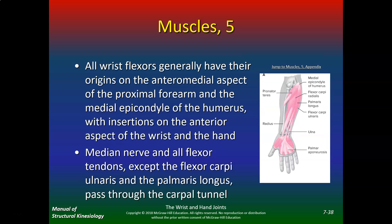All wrist flexors generally have their origins on the anterior medial aspect of the proximal forearm and the medial condyle of the humerus, with insertions on the anterior aspect of the wrist and hand. The median nerve and all flexor tendons — except the flexor carpi ulnaris and palmaris longus — pass through the carpal tunnel.